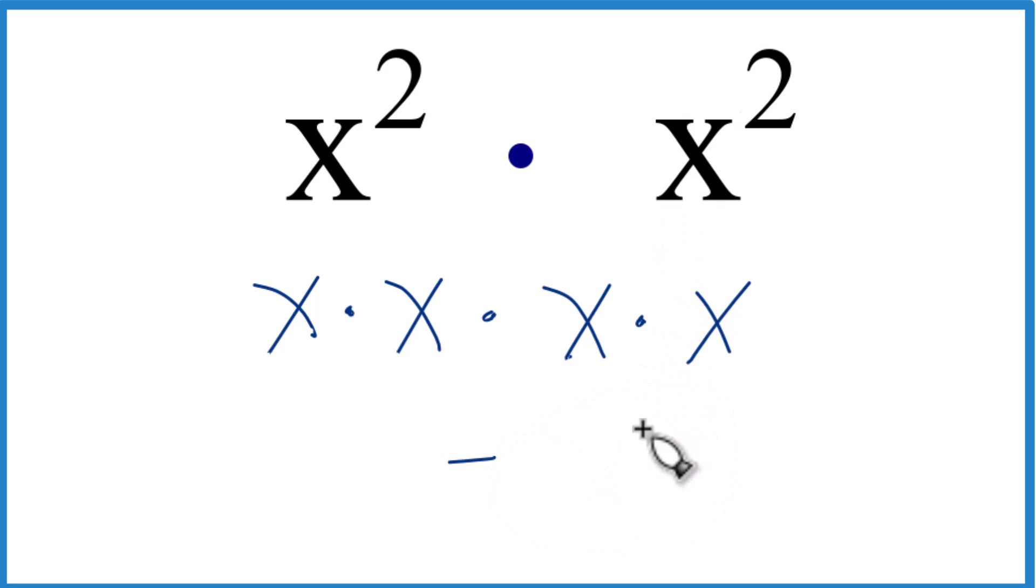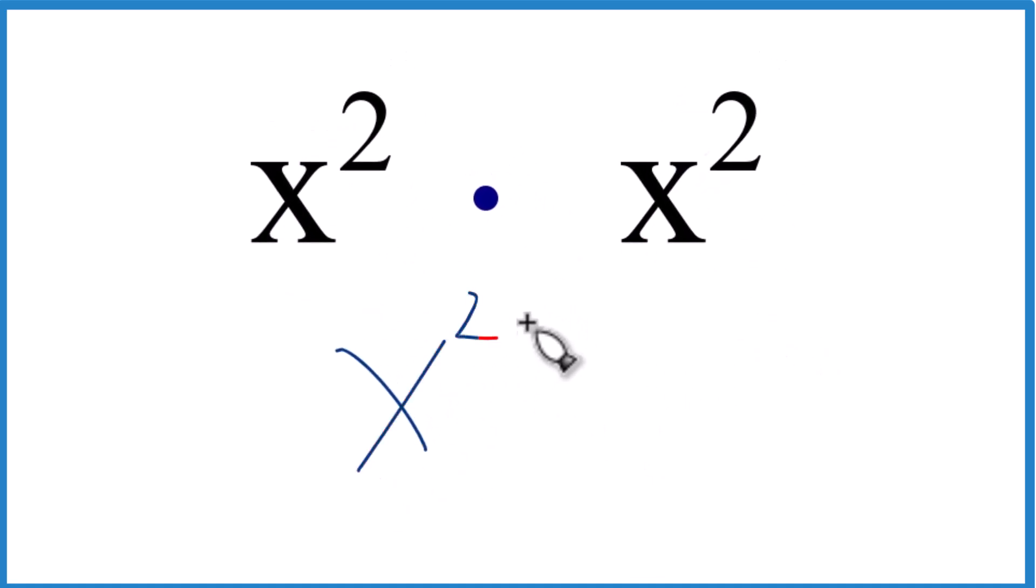So one way to do this is you could take your x squared and treat it like this. Since we have x here and here, these are the same, we can say x to the two plus two. So we just added these exponents together here, and that gives us x to the fourth, and that is what we found before.